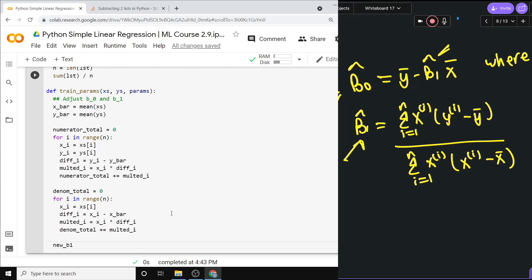And then the final thing here, so then we'll say just let this be new_beta_1. The value that we actually want for beta_1 is equal to the numerator_total divided by the denom_total.